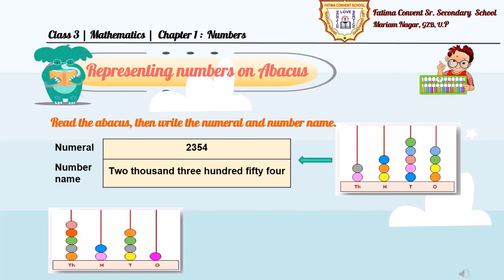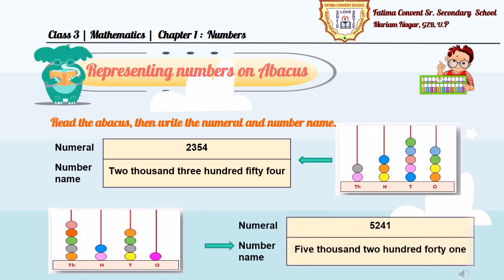Similarly, in this second Abacus table, in one's place, we have only 1 bead, in ten's place, there are 4 beads, in hundred's place, 2 beads and in thousand's place, there are 5 beads. So, the numeral formed will be 5241 and the number name is five thousand two hundred forty one.